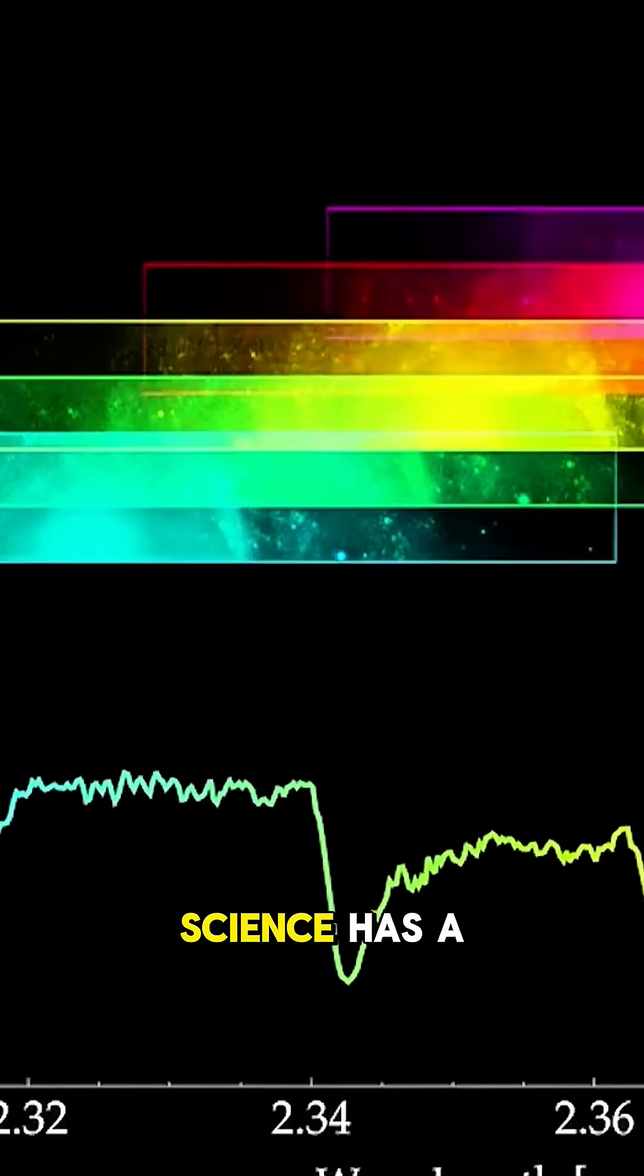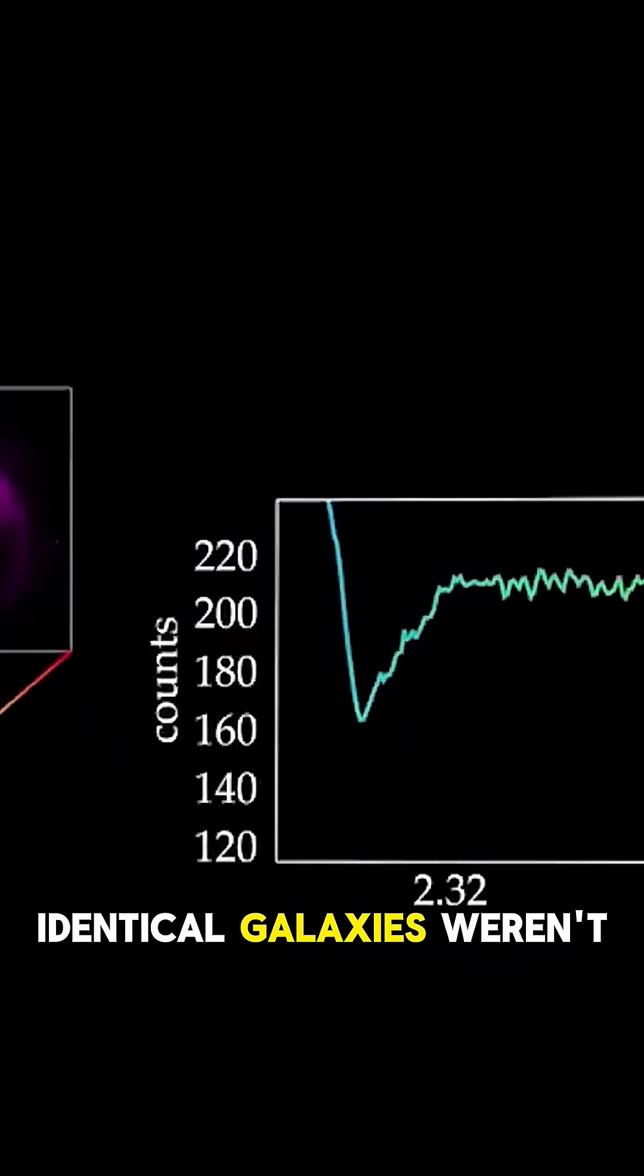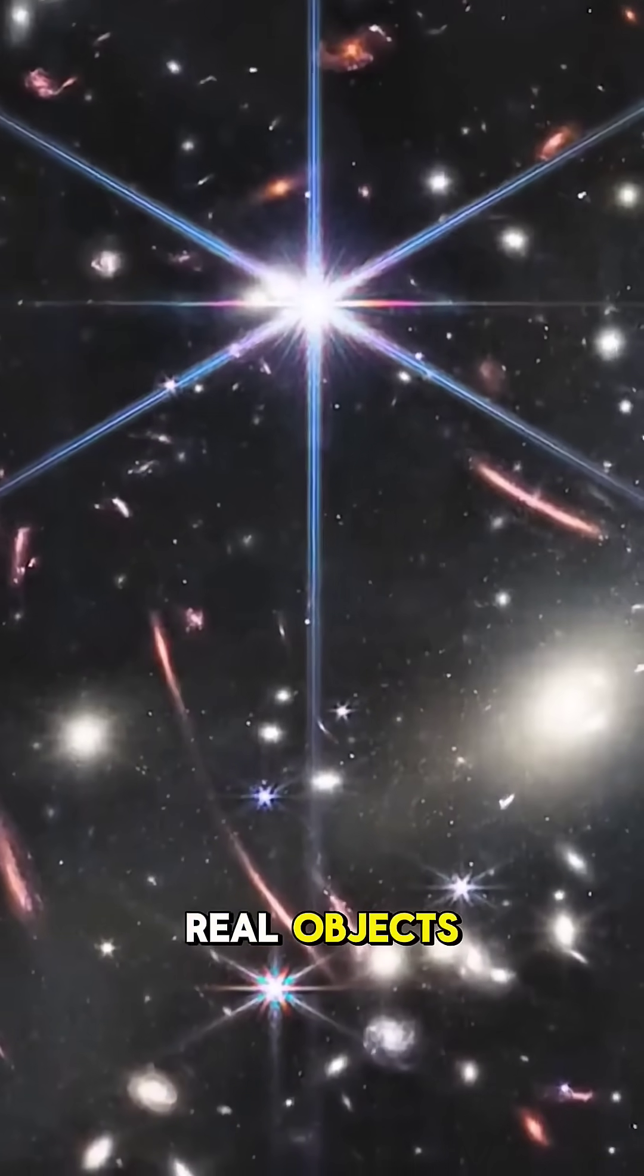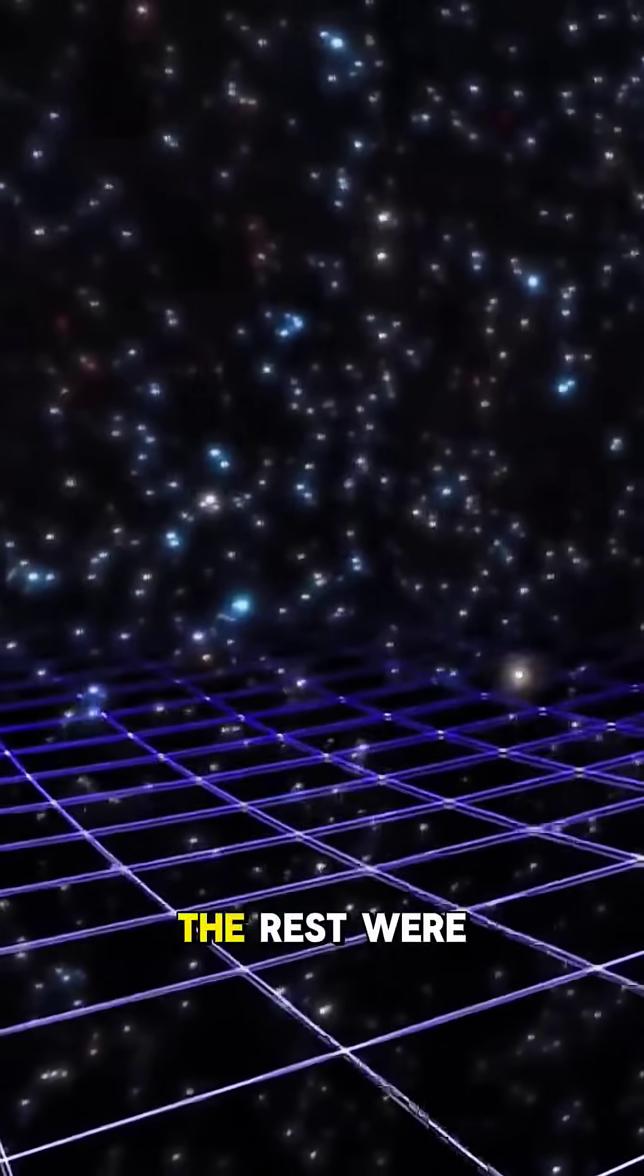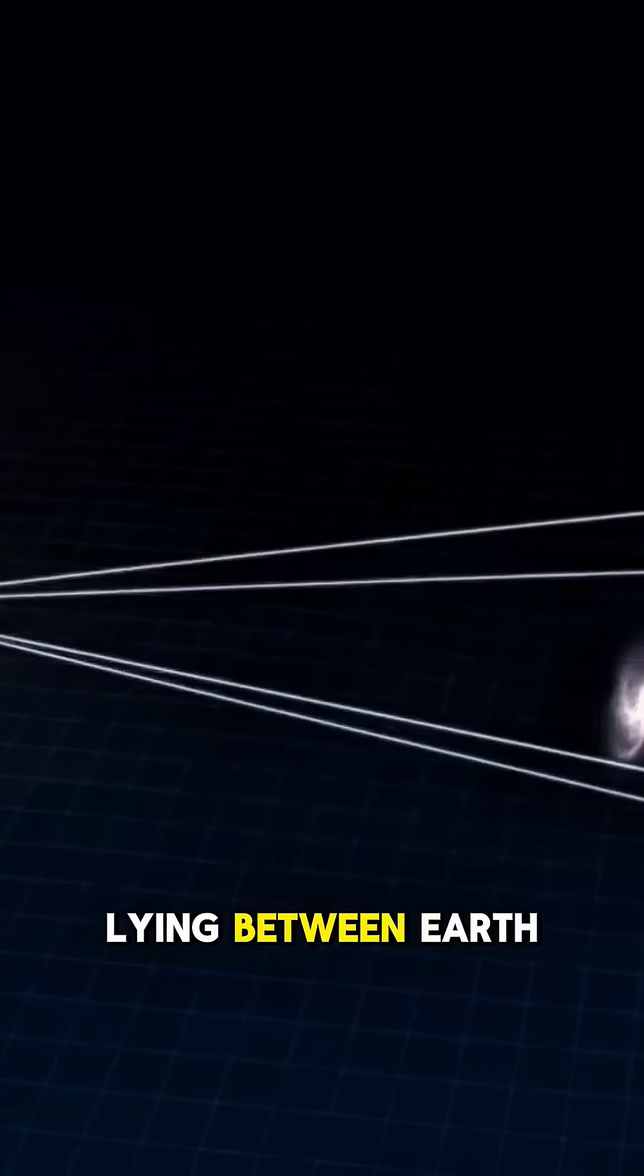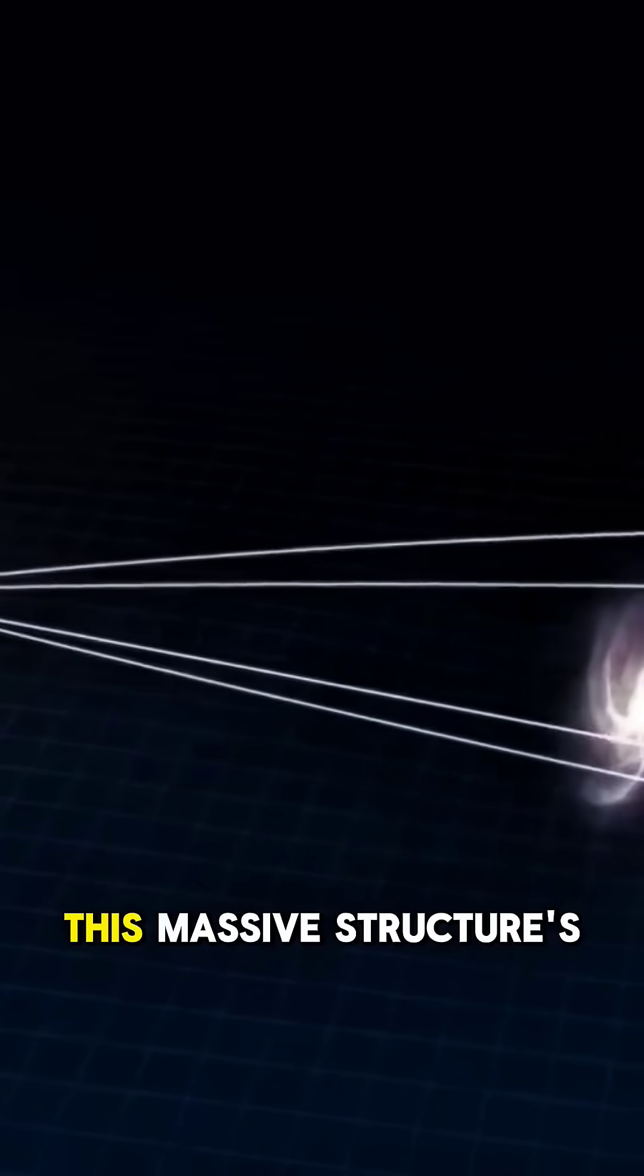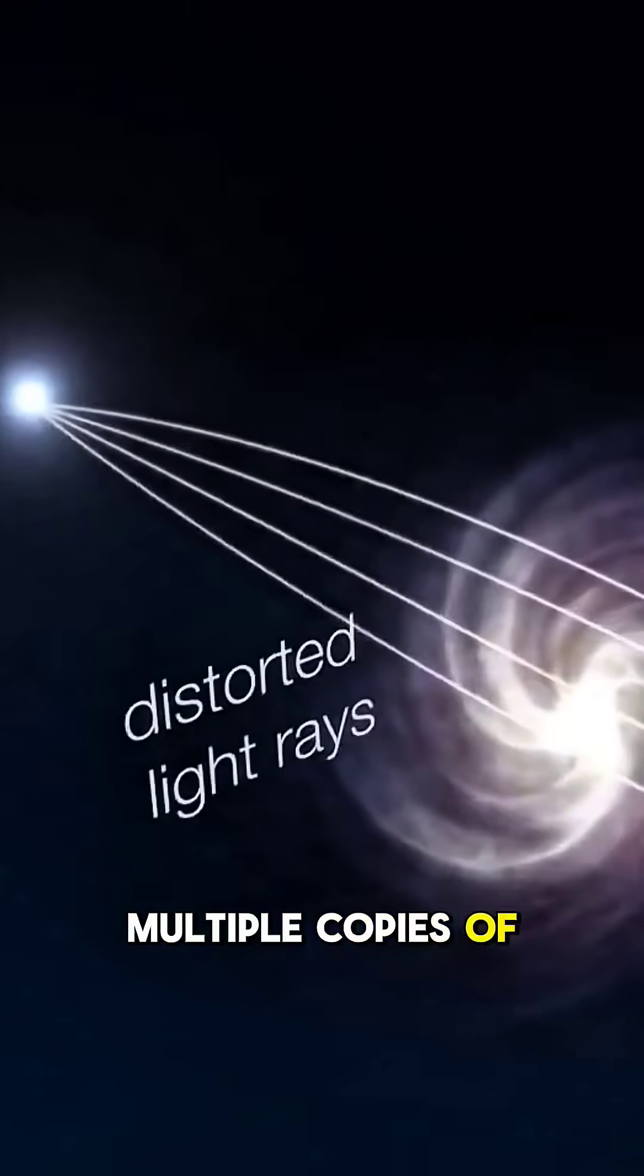But hold on. Science has a more grounded explanation. Most of those identical galaxies weren't real objects. In fact, only three of them actually exist. The rest were optical illusions, caused by an even larger cosmic structure lying between Earth and those galaxies. This massive structure's gravity bent and magnified the light from behind it, making us see multiple copies of the same galaxy.